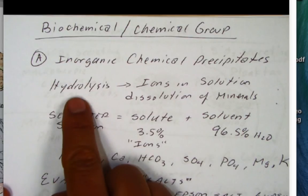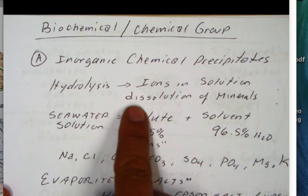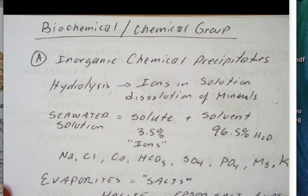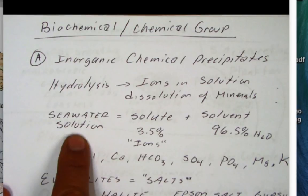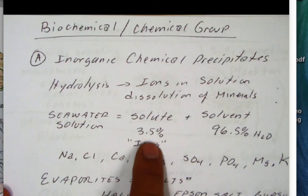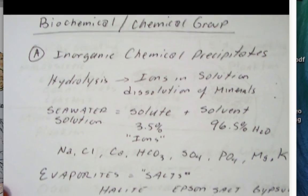And so remember in this one, there's this hydrolysis, which involves ions in solution, dissolving the minerals. That material gets in seawater. In fact, seawater is primarily, it's a solution. And the solution is really a mixture of something that's dissolved called a solute, and those are the salts, the ions, and water. Water is a solvent. It's doing the dissolving.